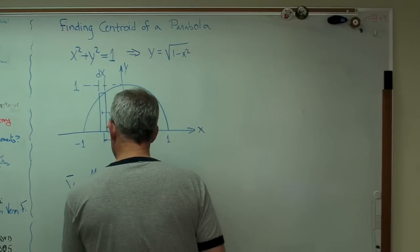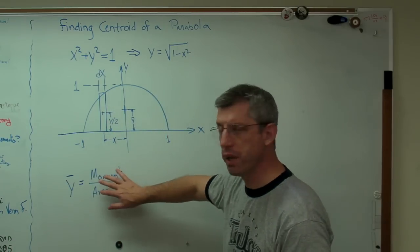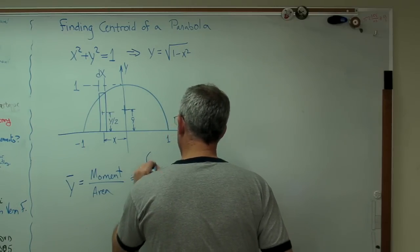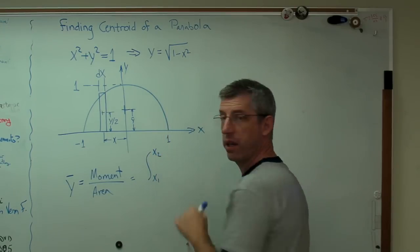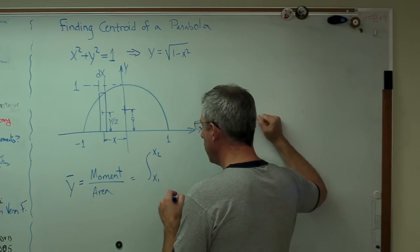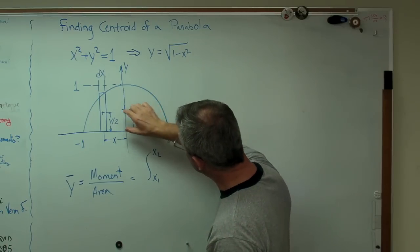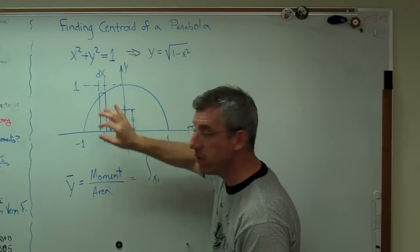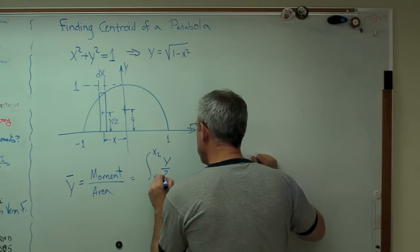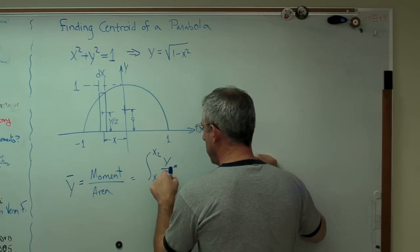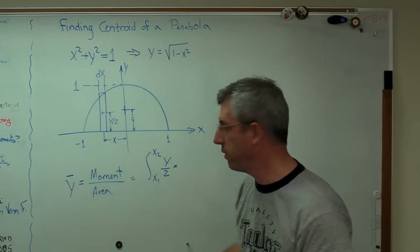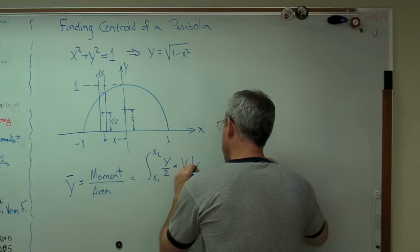So let me write out the definition here. This is a moment over an area. I'm using these terms kind of loosely, but you'll see what I mean. So moment, I'm going to go from x1 to x2 where that's x1 and that's x2. I'm going to integrate from here to here. I have to have some end conditions. So the moment is going to be the distance from the x-axis to the centroid of each individual box. And that's going to be y over 2. So that's the distance. The area is going to be y times dx.